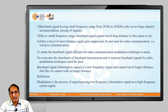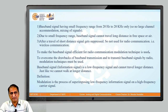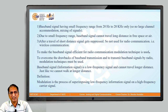What are the drawbacks? Number one, baseband signal has a small frequency range — it is from 20 Hz to 20 kHz. So no large channel accommodation or mixing of signals is possible. Second, due to the small frequency range, a baseband signal cannot travel over large distances in free space or air. After a short distance, the signal gets suppressed. So it is not used for radio communication. To make the baseband signal efficient for radio communication, we use modulation technique.